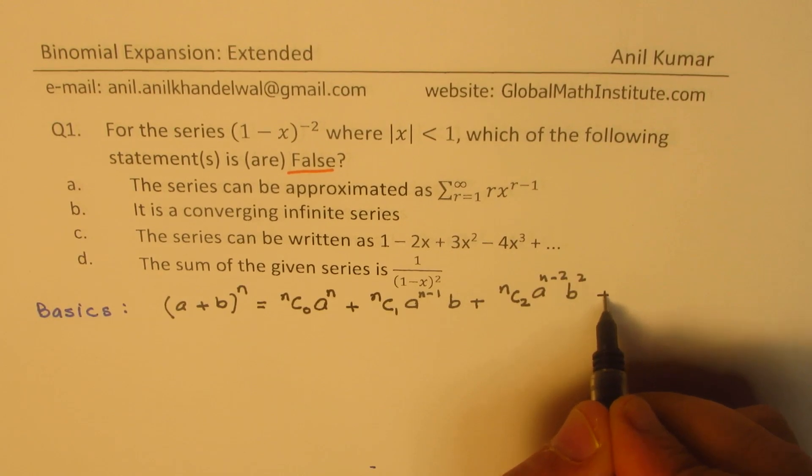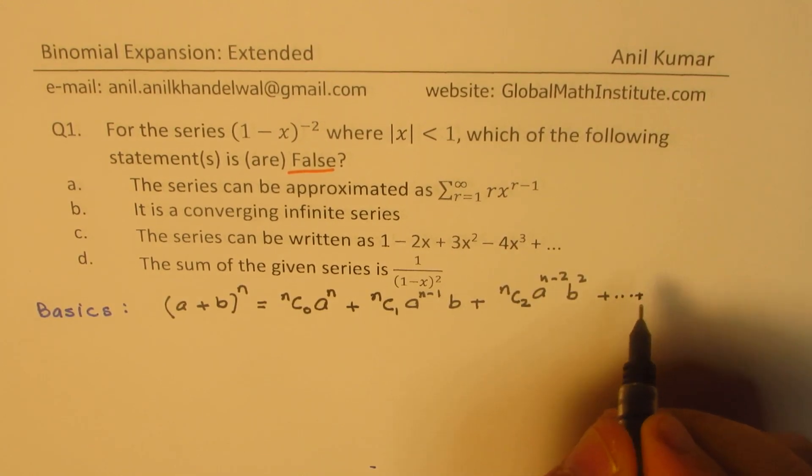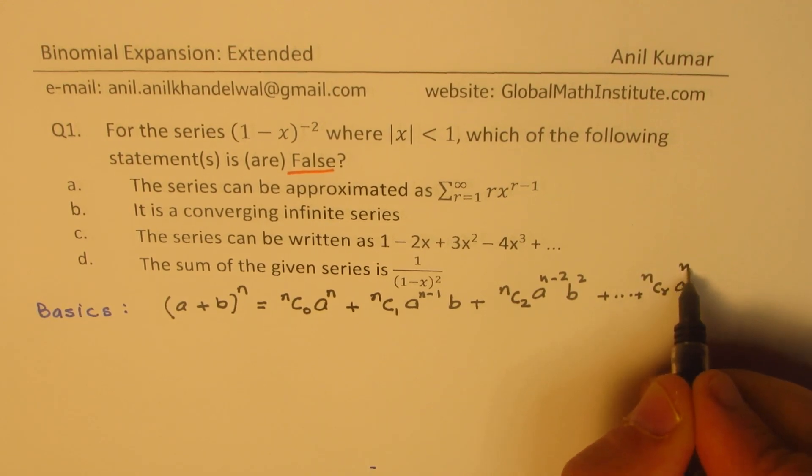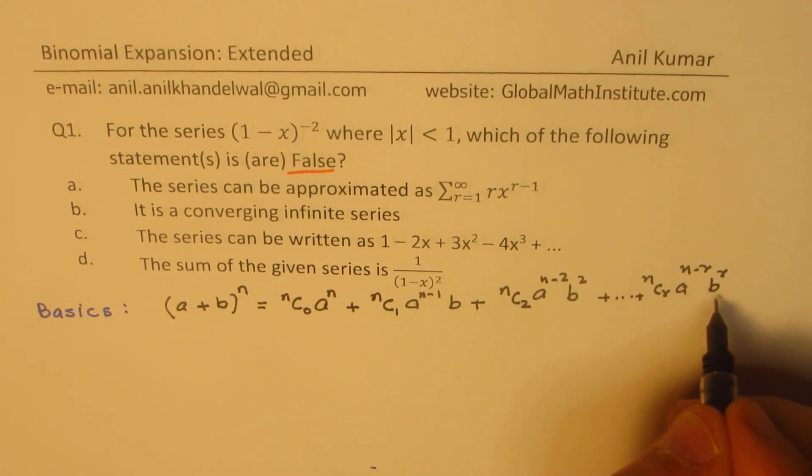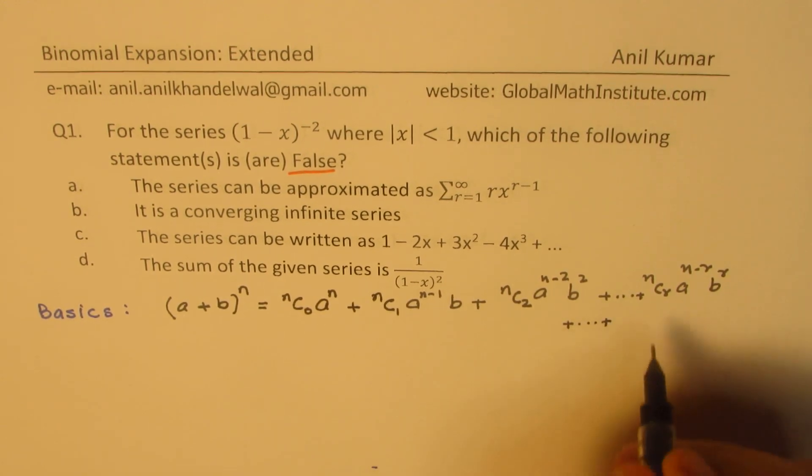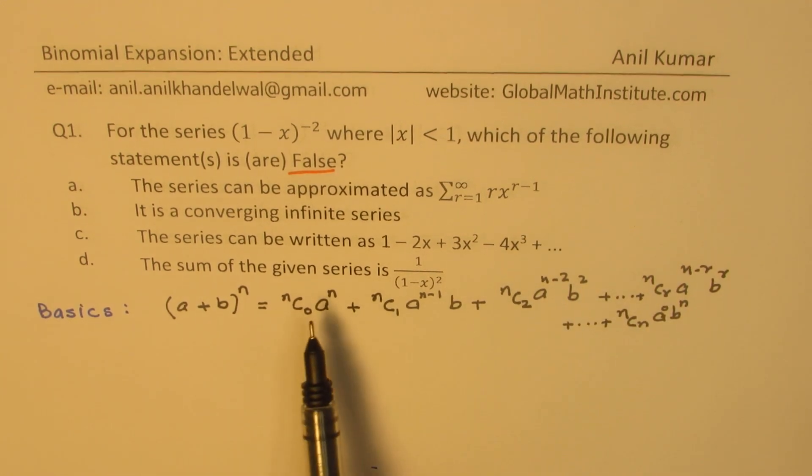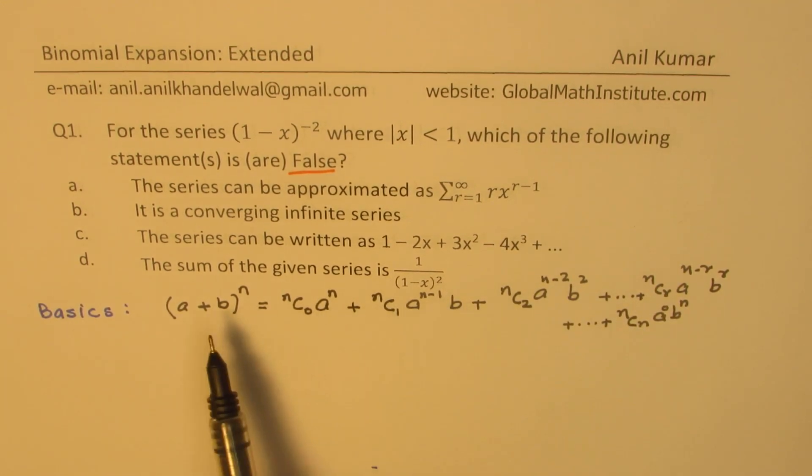The general term being nCr·a^(n-r)·b^r, and the last term being nCn·a^0·b^n. What you notice is that there are n+1 terms, and the general term is the (r+1)th term. The sum of the degrees is always n.